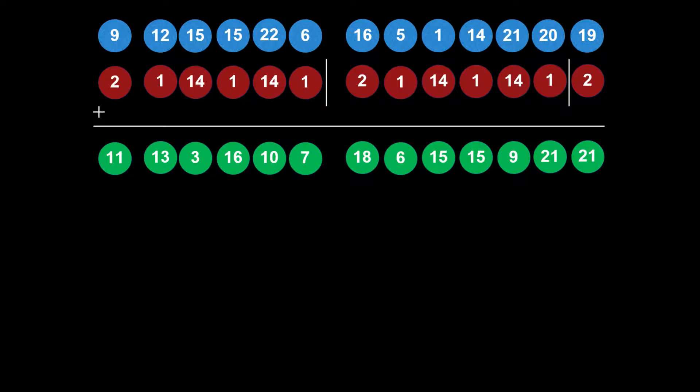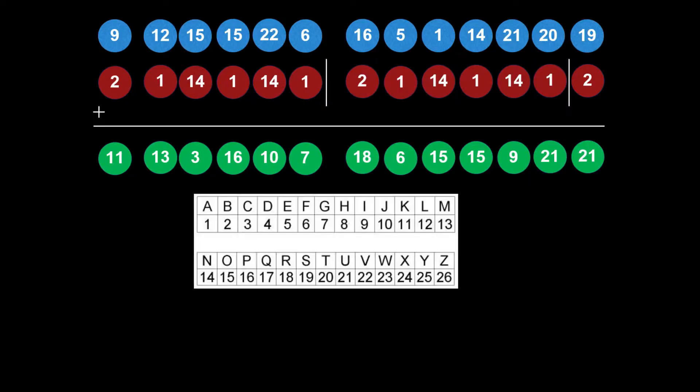We get some output numbers, and to get our encrypted message we map them back to letters — for example, 11 becomes K, 13 becomes M, 3 becomes C. So the encrypted message starts with K, M, C, and so on from there.